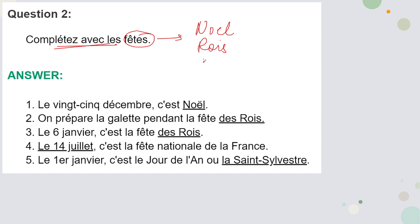Next is 'on prépare la galette pendant la fête des Rois'. Now Rois is a festival known as the King's Festival, and galette is a sweet dish — a cake prepared on this festival. La fête des Rois is celebrated on 6th Janvier.